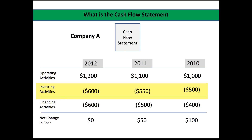Looking at the third line — financing activities — it's also a negative number: $400 in 2010, $500 in 2011, and $600 in 2012. This is a good thing because it means Company A is paying off its debt. In 2010, it paid off $400 of debt with $100 remaining that year. If this number were positive, it would mean the company is taking on new debt — bringing more cash into the bank account short-term, but that debt will eventually have to be paid off, potentially reducing future positive cash flow depending on how the borrowed capital is used.